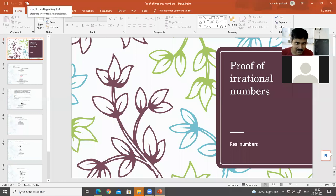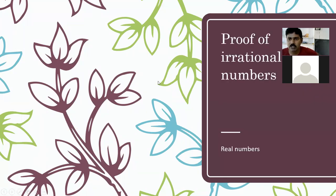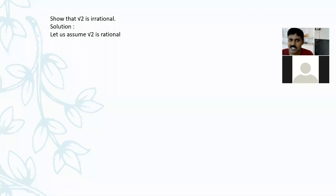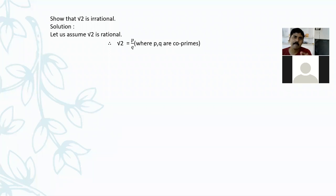So let us move on to how we can prove that irrational numbers are indeed irrational. We will go with the proof of irrational numbers, which are a part of real numbers. First one: show that root 2 is irrational. We already know the general definition that the square root of prime numbers is always irrational. So we'll prove how root 2 is irrational. I will use the indirect method of proof — let me now assume that root 2 is rational, which is opposite to the given statement.